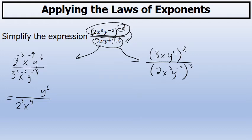I've taken the two factors in the numerator that had a negative exponent and moved them to the denominator. The y to the sixth, which did not have a negative exponent, stayed in the numerator.